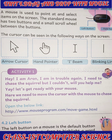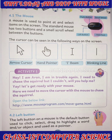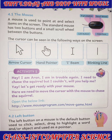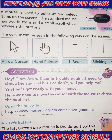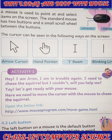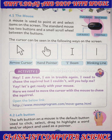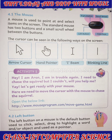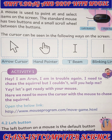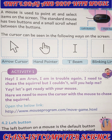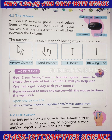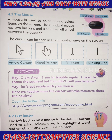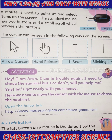The cursor can be seen in the following ways on the screen: first, the arrow cursor; second, the hand pointer; third, the I-beam; and fourth, the blinking line. These are the different types of cursors you can see on a computer screen.